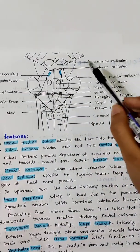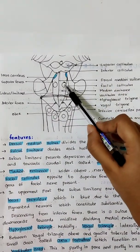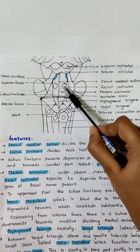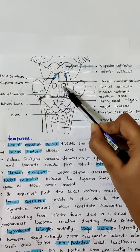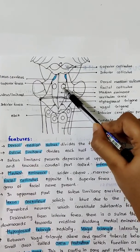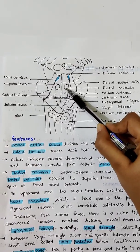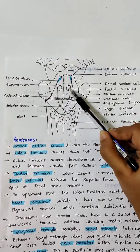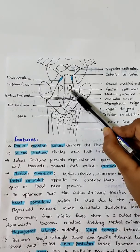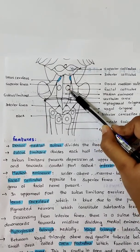The median eminence represents the facial colliculus. It is called the facial colliculus because it overlies the facial nerve nuclei — specifically the genu of the facial nerve — which is why this region is named the facial colliculus.